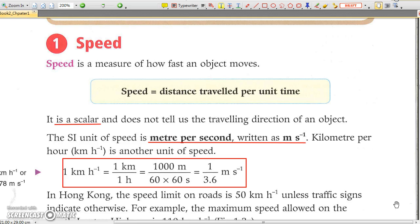The SI unit of speed is meter per second. For example, 2 meter per second means an object moves 2 meter in 1 second.